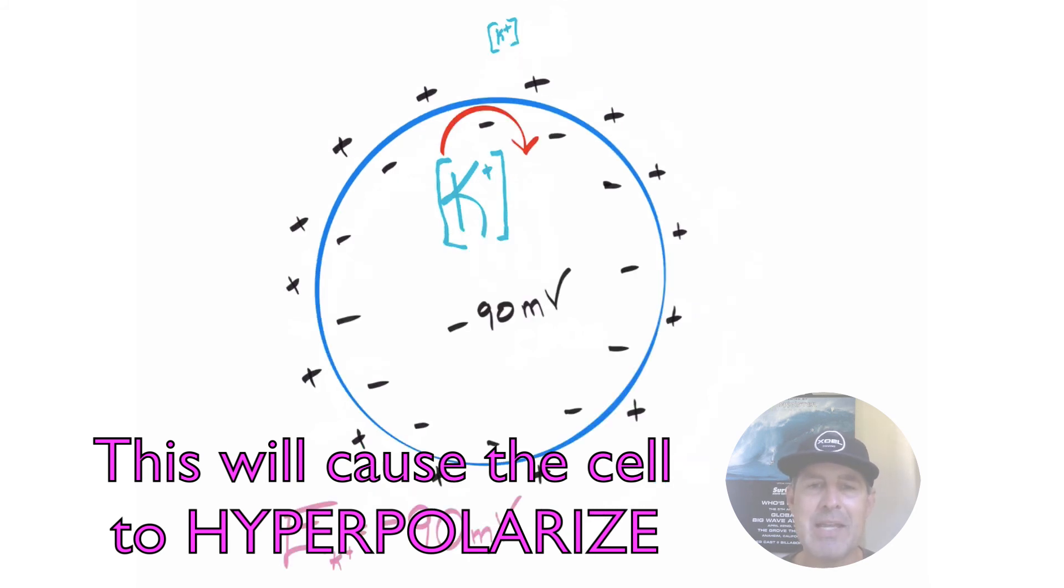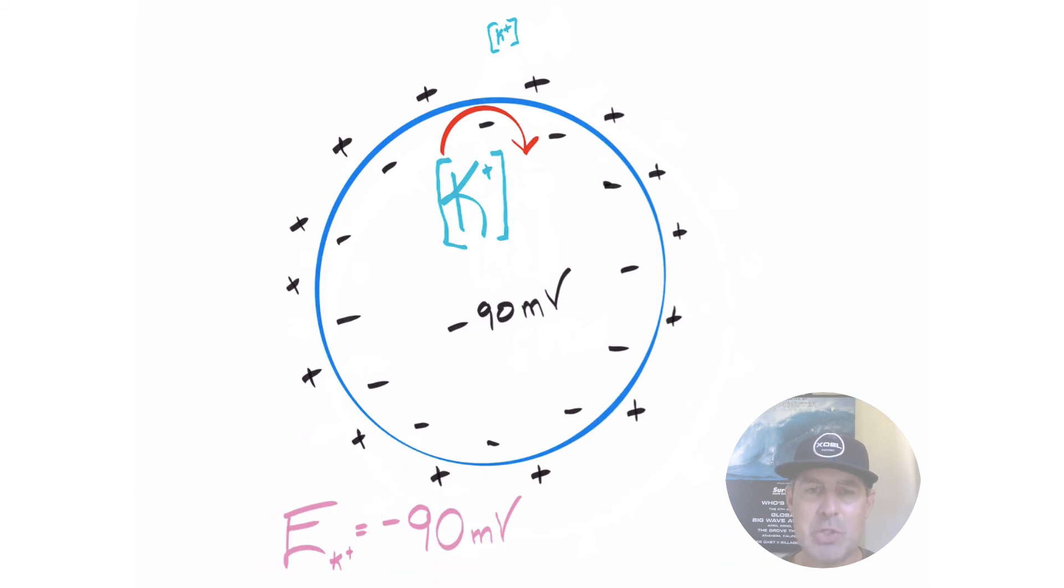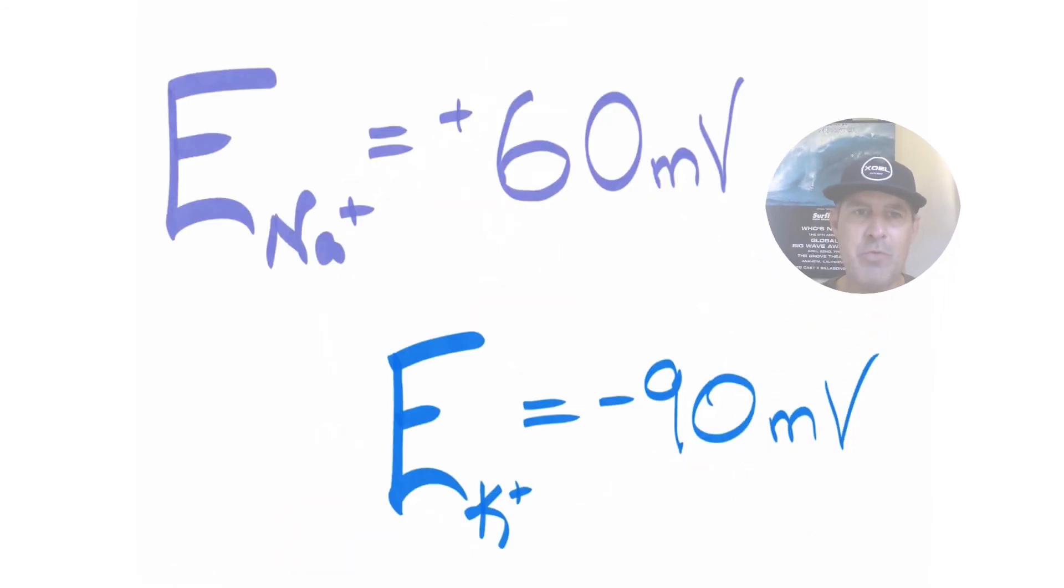Now that we get to negative 90, which is potassium's equilibrium potential, it's so negative within the interior of the cell. And one could suggest it's super positive on the exterior, but let's just focus on the negativity on the interior of the cell. That is going to entice potassium to stay in the cell because it is so attracted to that negative charge within the cell that it is going to disregard its chemical gradient and stop leaving the cell. So potassium's equilibrium potential is negative 90 millivolts.